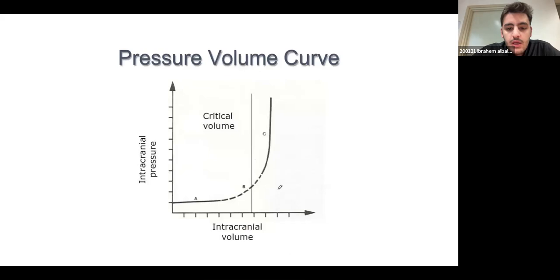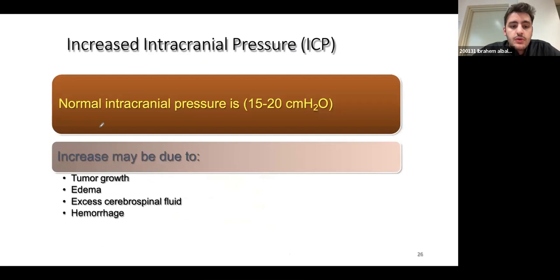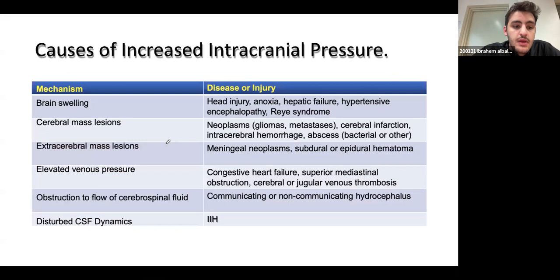As intracranial pressure increases, intracranial volume increases rapidly at very high pressures. Normal intracranial pressure is from 15 to 20 mmHg. Causes of it increasing include tumors, edema, hydrocephalus, and hemorrhage — all of these require management accordingly.